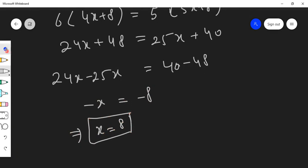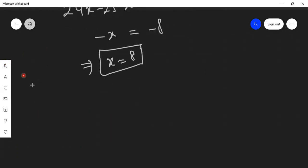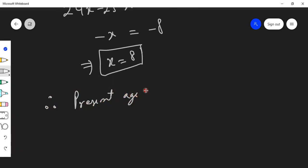Once we get x, they were asking about present ages. So we can sum up our answer. Therefore, present age of first person was Anu, and her age was 4x years. So 4x means 4 into 8, that is 32 years.